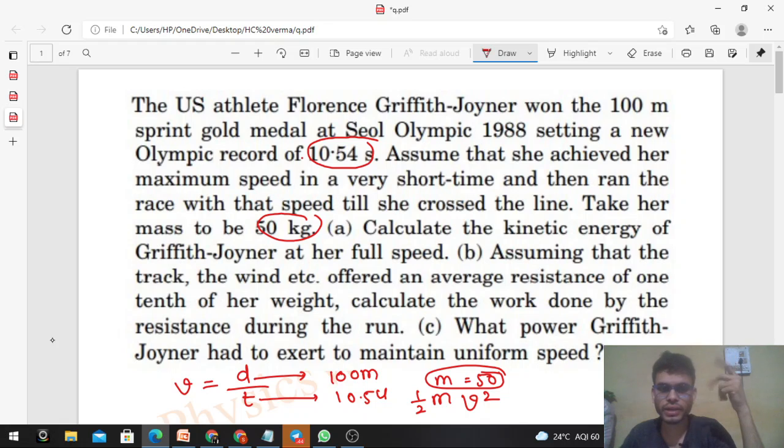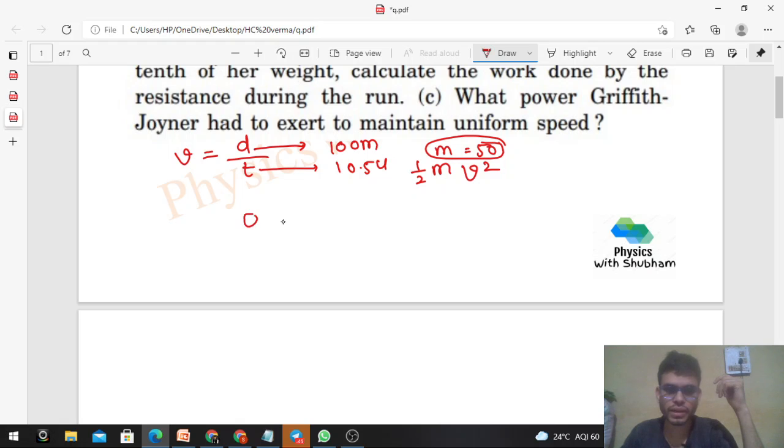From here we can calculate the kinetic energy. Option B ki baat karte hain. Assuming that the track, the wind, etc. offered an average resistance of one-tenth of her weight, calculate the work done by the resistance during the run. So resistance force de rakha hai kitna hai? One-tenth of her weight. Now what is her weight? mg, right? So what will be the resisting force? That will be one-tenth of mg, mg by 10. m kitna de rakha hai? 50, right? g ka value 9.8.